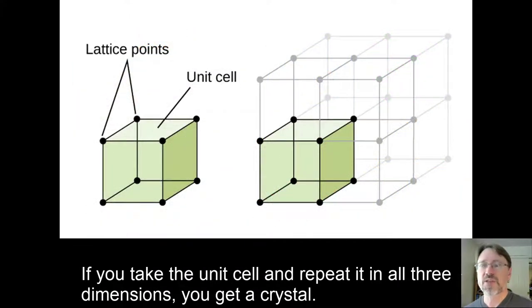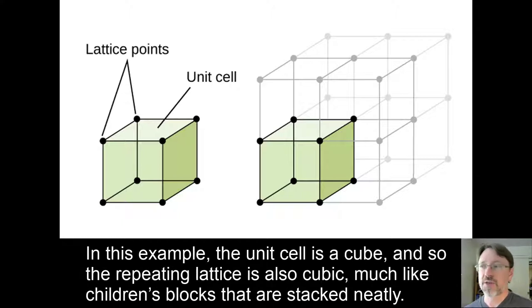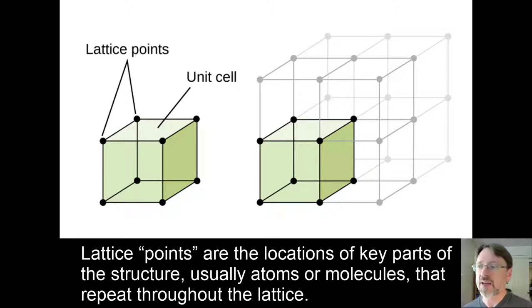If you take the unit cell and repeat it in all three dimensions, you get a crystal. In this example, the unit cell is a cube, and so the repeating lattice is also cubic, much like children's blocks that are stacked neatly. Lattice points are the locations of key parts of the structure, usually atoms or molecules, that repeat throughout the lattice.